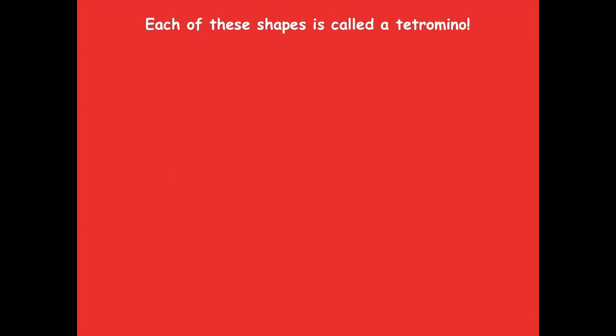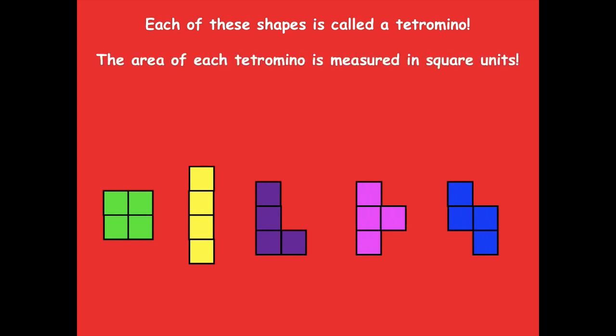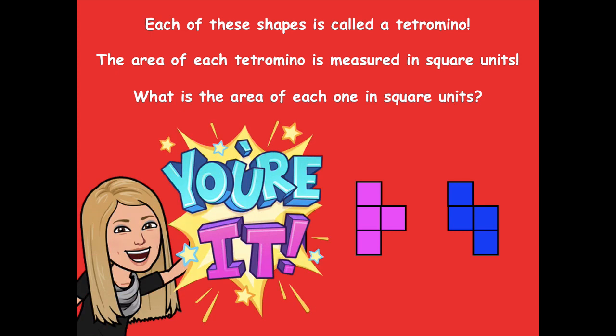Each of these shapes is called a tetromino. So here we have them — look how fun they look! The area of each tetromino is measured in square units. What is the area of each one in square units? Pause the video, take a look at each one, and notice what the area is.